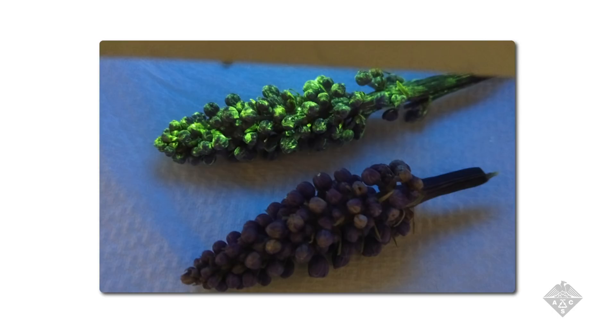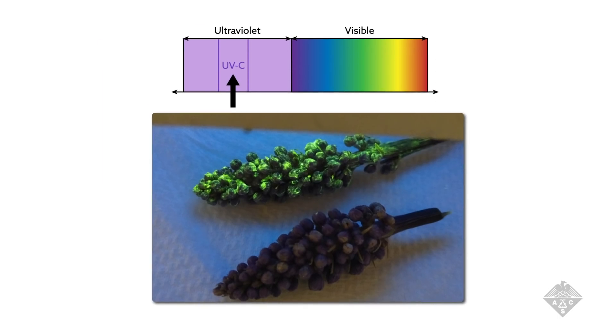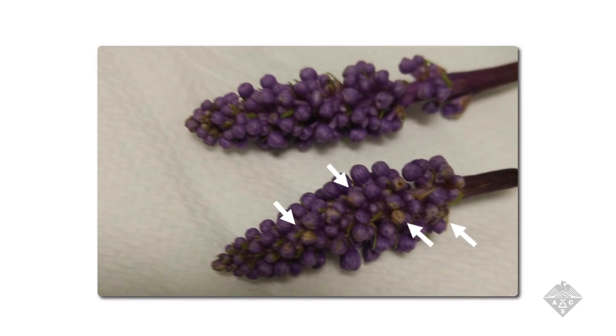The researchers coated clippings of chrysanthemums and lily turf with the MOFs and then exposed them to UV-C light, a part of the solar spectrum that can damage plants and even cause cancer. Compared with unprotected plants, the coated plants showed less wilting and bleaching.